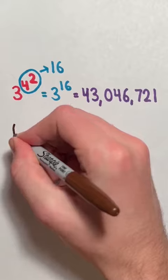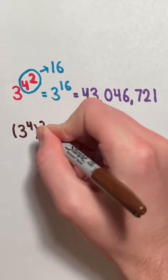However, let's say you have 3 to the power of 4 within parentheses with an exponent of 2 on the outside.